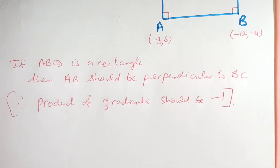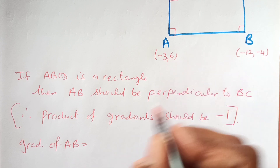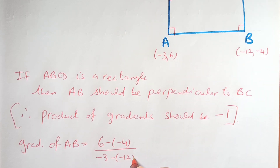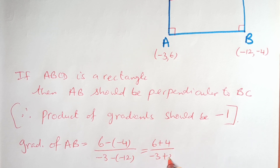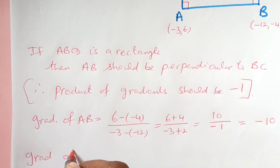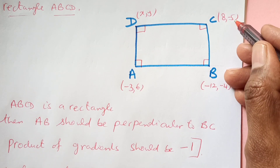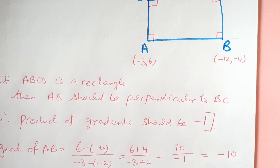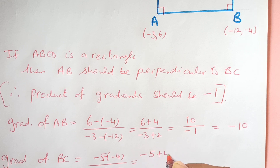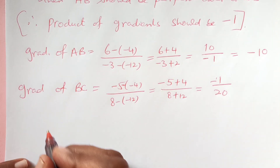Let's find the gradients first and then check whether the product equals negative 1. The gradient of AB is change in y over change in x: (6 minus negative 4) over (negative 3 minus negative 12), which is 10 over 9, giving negative 10... wait, that is 10 over 9. Now for gradient of BC, we take the coordinates of B and C: (5 minus negative 4) over (8 minus negative 12), which is negative 1 over 20.